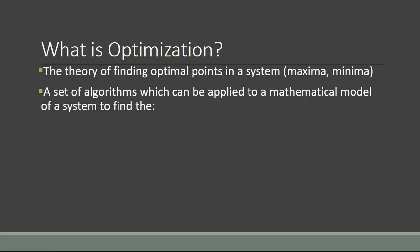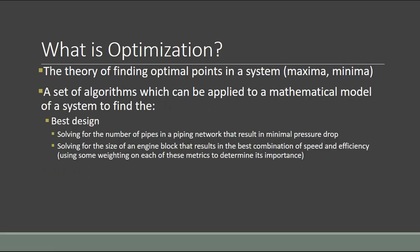Optimization refers to a set of algorithms which can be applied to a mathematical model of a system so that you can find the best design. For example, if you're designing a heat exchanger, you might want to find the number and size of pipes that result in minimal pressure drop. In automotive design, you might solve for the size of an engine block that gives the best combination of speed and efficiency — with a heavier emphasis on speed for a performance car, or efficiency for an economy car.